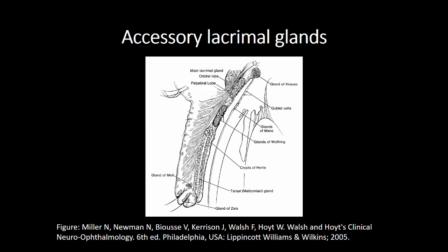Dry eye may not always result, however, as the accessory lacrimal glands of Krauss and Wolfring, located in the conjunctiva of the superior fornix and superior tarsal border respectively, may be sufficient to keep the ocular surface moist.